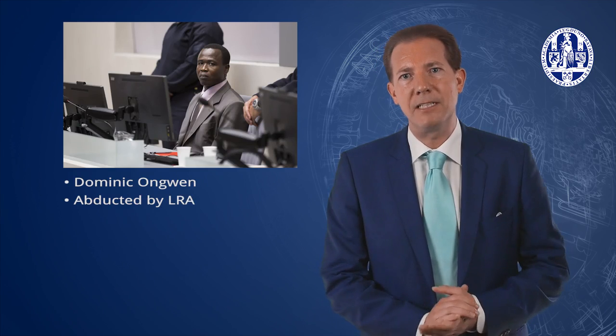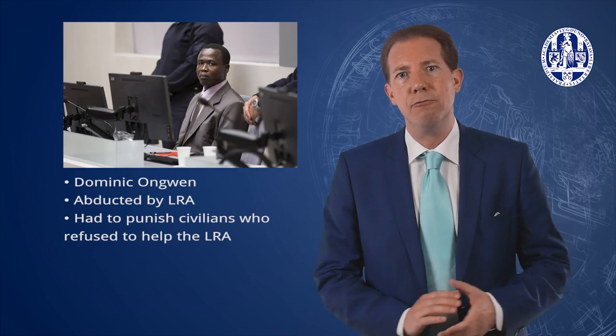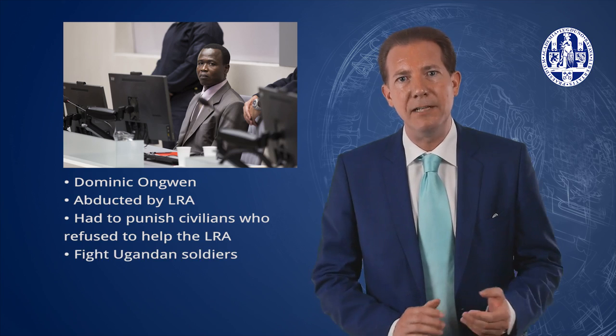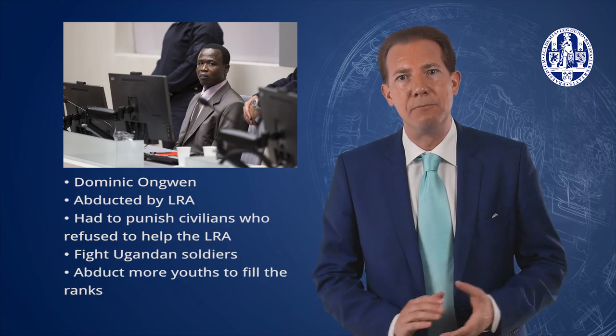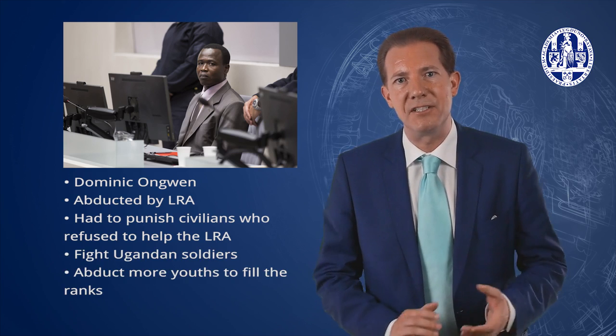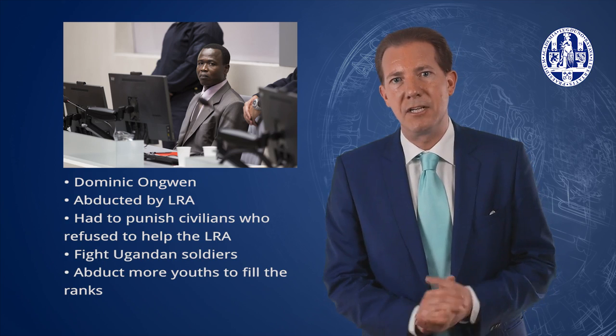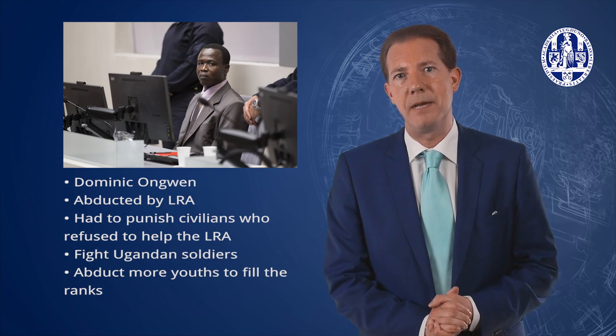One key example is former child soldier Dominic Ongwen, who was abducted by the Lord's Resistance Army. He was forced to punish civilians who refused to help the LRA, fight Ugandan soldiers, and abduct more youths to fill the ranks. He faces trial at the ICC as an adult for some of the crimes he suffered as a child, such as enslavement as a crime against humanity. How can a criminal process deal with such tensions? This is what we will explore in this session.